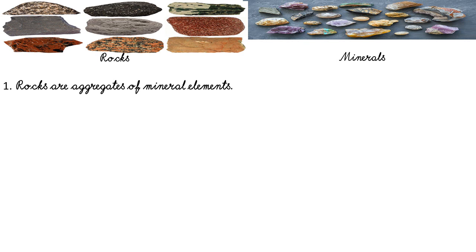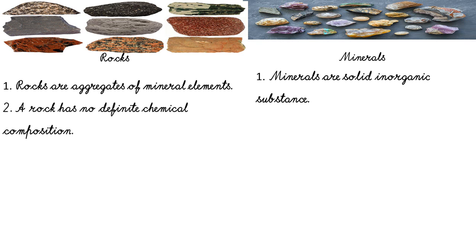Now let's learn the differences between rocks and minerals. Rocks are aggregates of mineral elements — that means rocks are formed by the combination of several separate elements. Minerals are solid inorganic substances, meaning minerals are not derived from living matter. Second, a rock has no definite chemical composition — meaning a material always contains an element in a definite proportion, and rock has no such definite proportion.